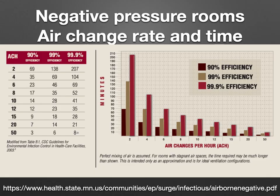That is why one should have negative pressure rooms — where the pressure inside the room is slightly lower than in adjacent areas, corridors, or recovery, so that air is drawn inside the room rather than leaking out. Studies have found that faster air changes increase the efficiency of negative pressure rooms in removing aerosol contaminants. At 12 air changes per hour, the air gets clean in 35 minutes with 99.9% efficiency, while at 50 air changes per hour, 99.9% efficiency is achieved in just 8 minutes. Normally, negative pressure rooms work at 12 air changes per hour.